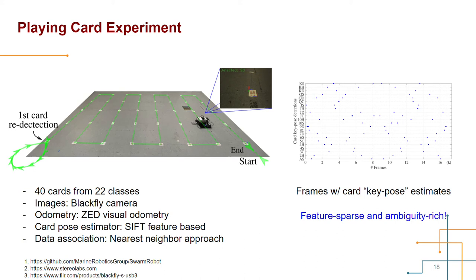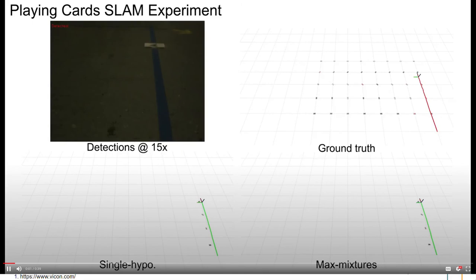For card pose estimation, we used the SIFT feature-based estimator, which can return the two card pose hypotheses. We made some key pose criteria to filter out spurious pose estimates and only use the key poses for optimization. From the key pose detection matrix on the right-hand side, we can see the environmental features are very sparse. We applied the proposed max mixtures method and the single hypothesis method to process the data. The ground truth was recorded by the Vicon mocap system.